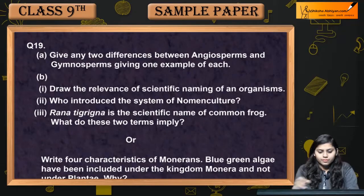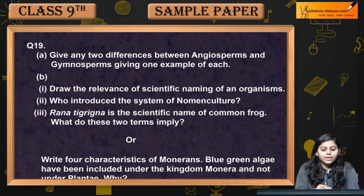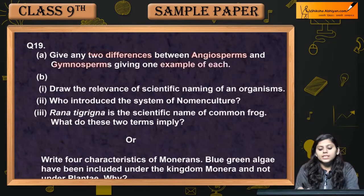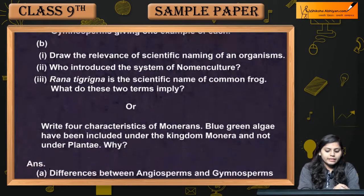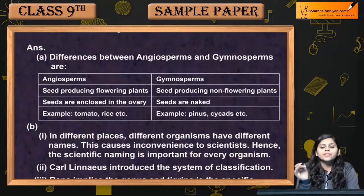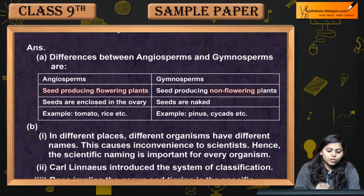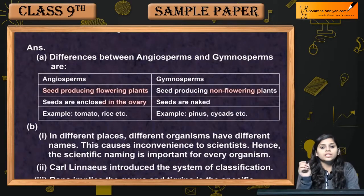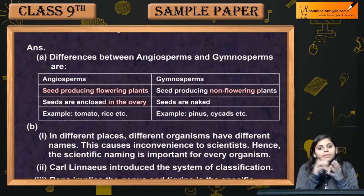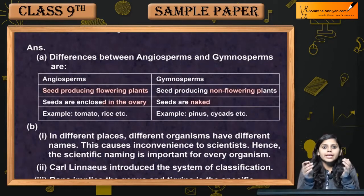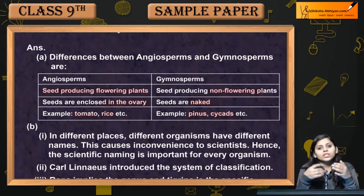Question number 19: give any two differences between angiosperms and gymnosperms, giving one example of each. Angiosperms are seed-producing flowering plants, whereas gymnosperms produce seeds but do not produce flowers. In angiosperms, seeds are enclosed in the ovary, but in gymnosperms, seeds are naked. Examples are tomato and rice for angiosperms, and pinus and cycads for gymnosperms.